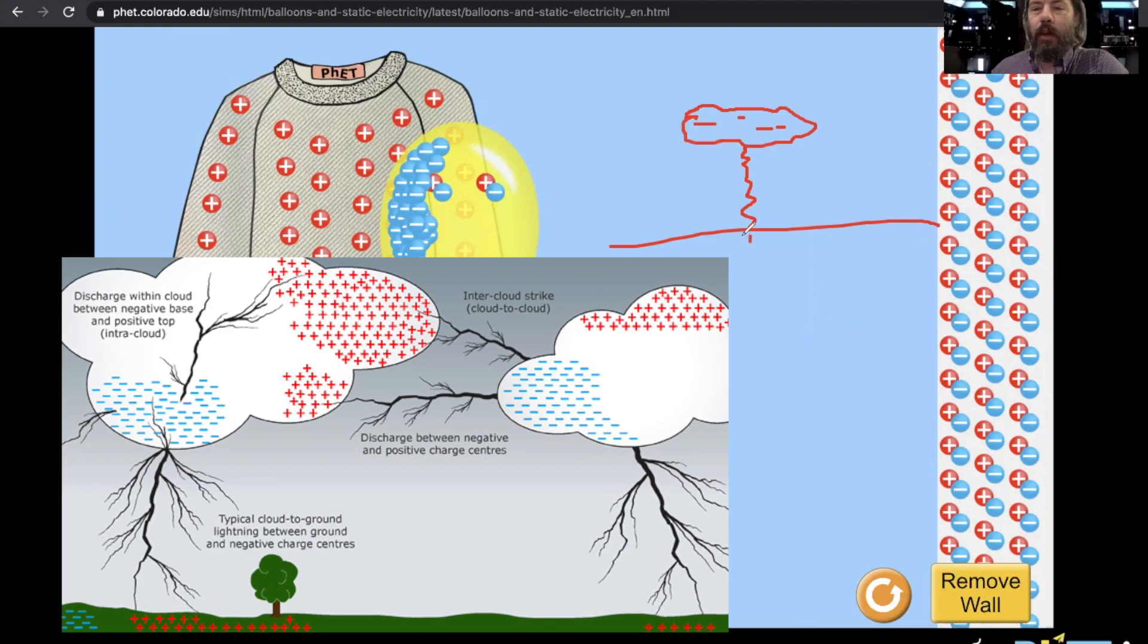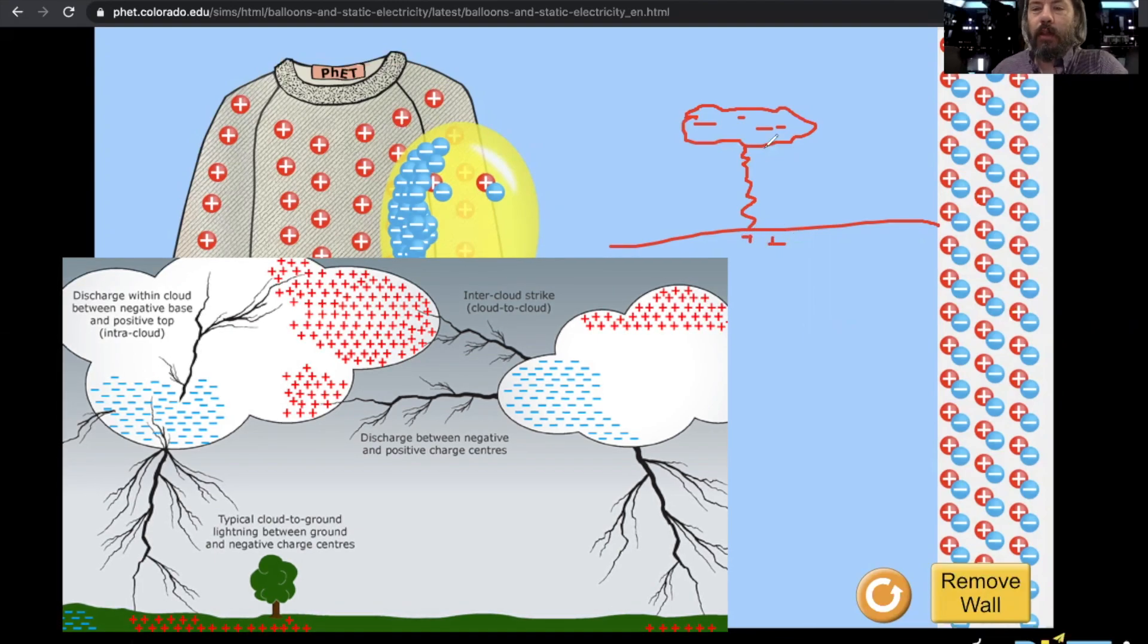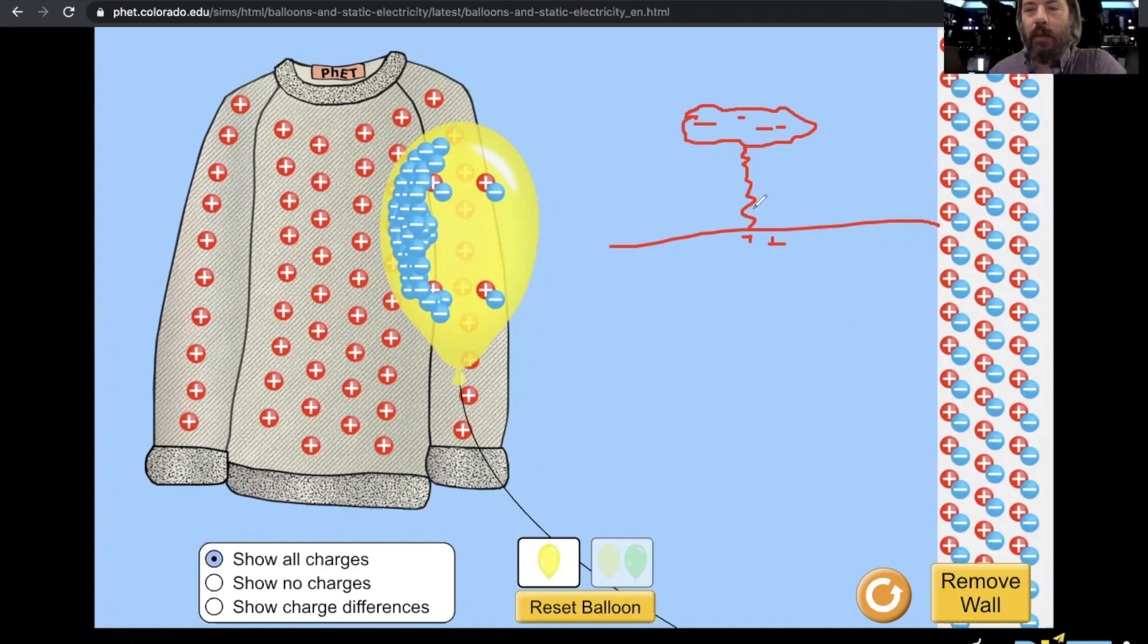But we've got a buildup of positive, and then the charges neutralize, and we get this discharge of static electricity. That is the basics of static electricity. We do work to move the electrons to another object, and now we've got a charged object, and that charged object can stick to or attract to things or repel things. All right, that's all I've got.